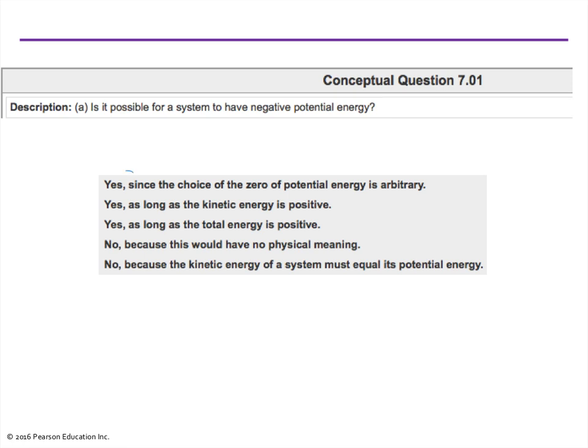So, the reason is, as we saw with the last example, is the choice where potential energy is zero is rather arbitrary. So it's always possible that because of what you chose as your zero point, you will end up with a potential energy less than zero at some other location.